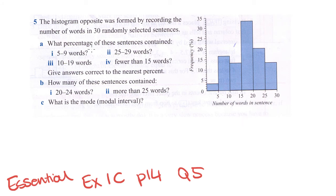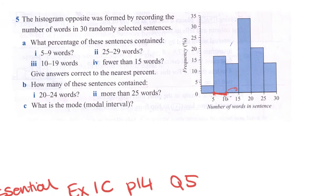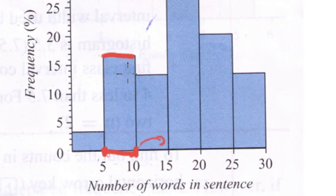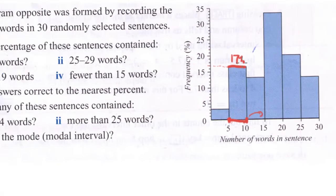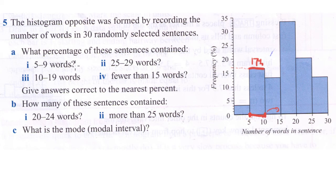The first question is asking us what percentage of these sentences contained 5 to 9 words. That's this interval here. We go up to 10 but don't include it because that's in the next section. So 5 to 9 is here. This is the height of that bar so we read off the percentage. The percentage is 17%.